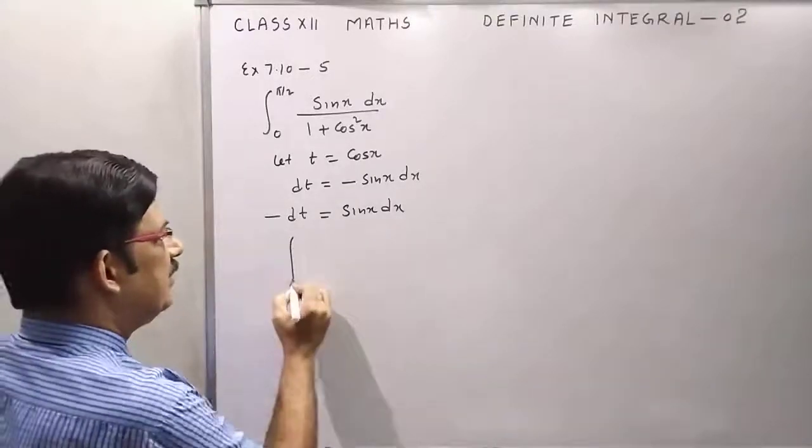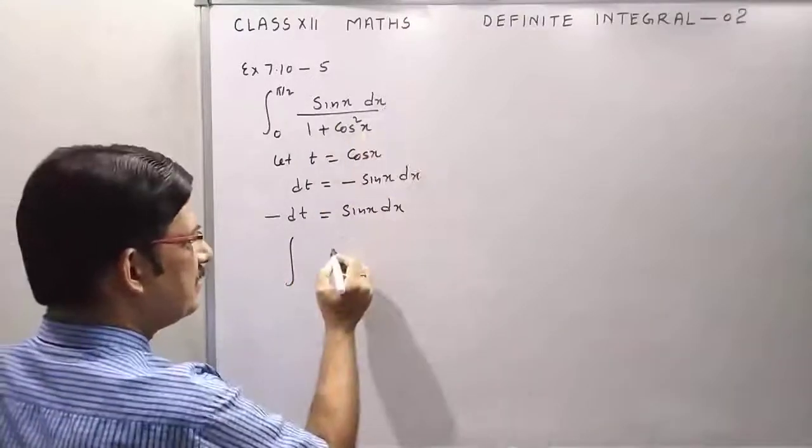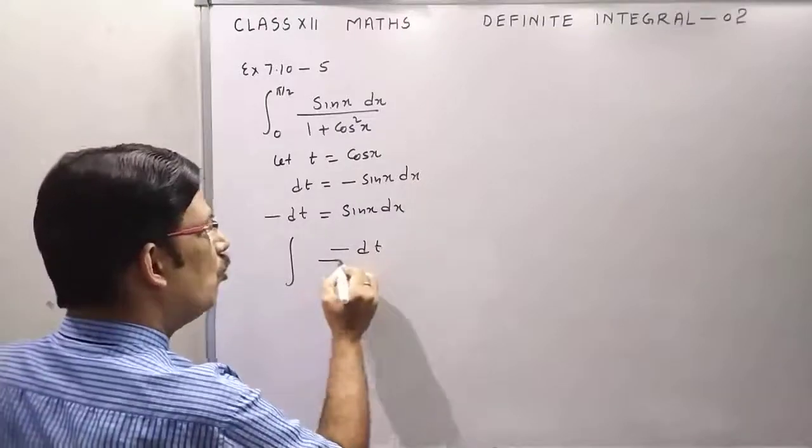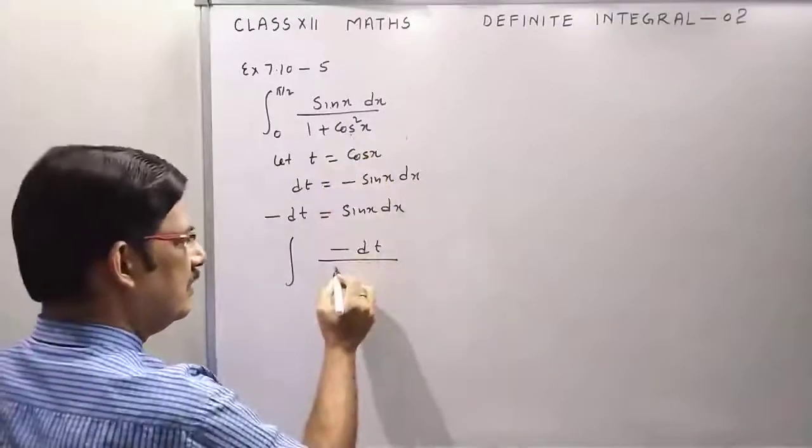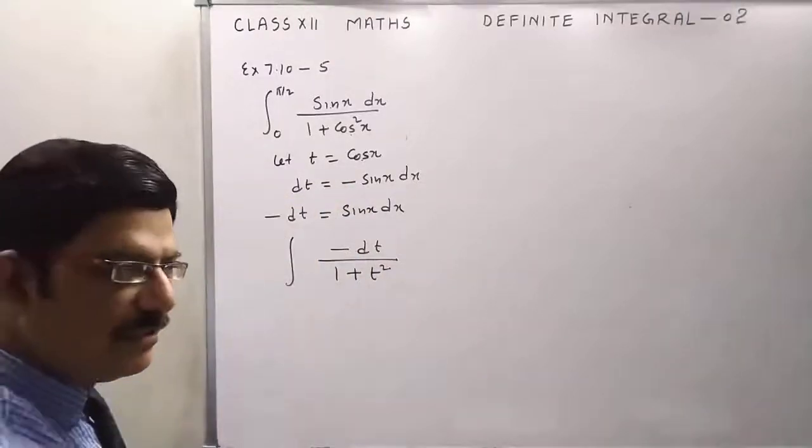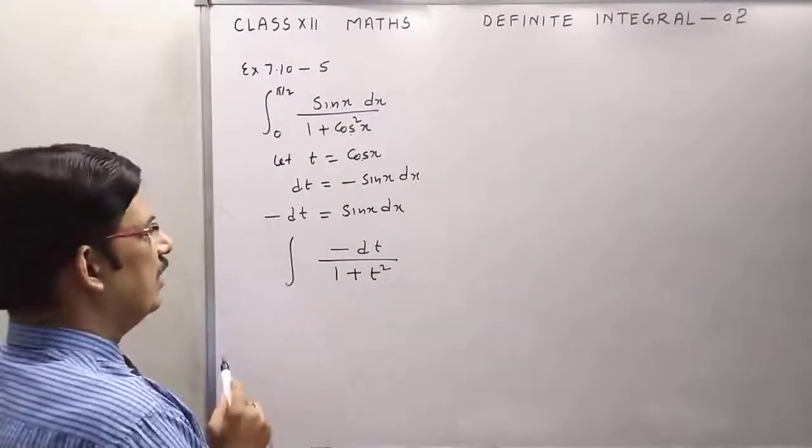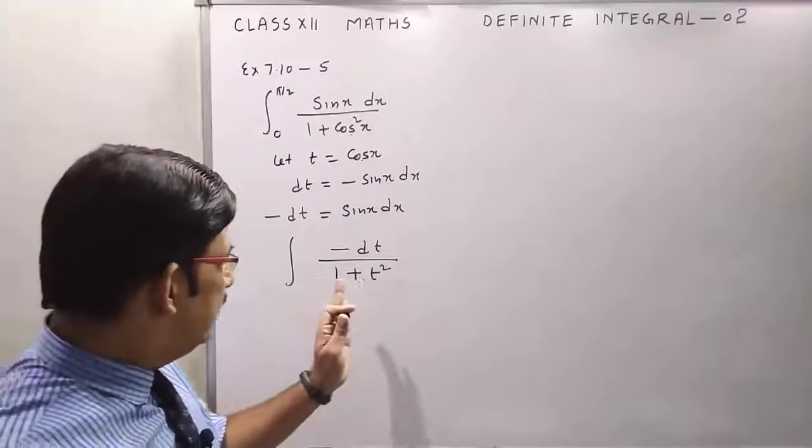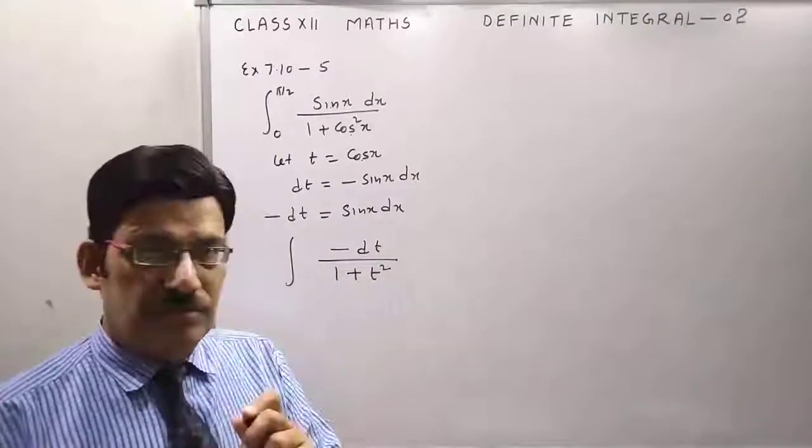Now the integration becomes sine x dx, which means minus dt over 1 plus t squared, because we have cos x equal to t, so it is t squared. Now at this step, we have to change the limit also. Remember this point.